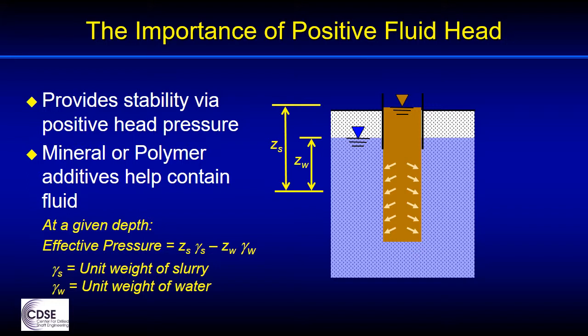Slurry with a higher viscosity than water is typically required to maintain the positive head during excavation because water flows out too fast through permeable strata. A mineral slurry can also have a density that is a bit higher than water, and that can contribute some additional pressure as indicated in the equations on this slide. Regardless of the calculated stabilizing pressure, it is important that the drilling operations and the tools be used in such a way that the swab pressure below the tool during withdrawal does not cause a loss of positive head in the hole. This is discussed further in the lessons on tools and techniques for excavating.